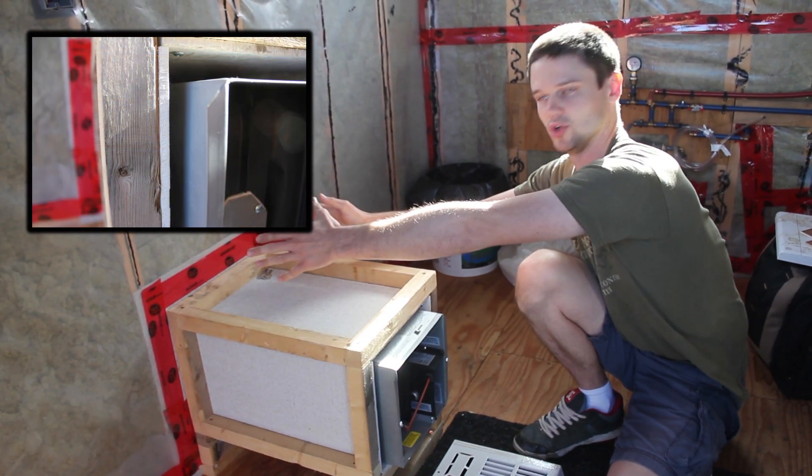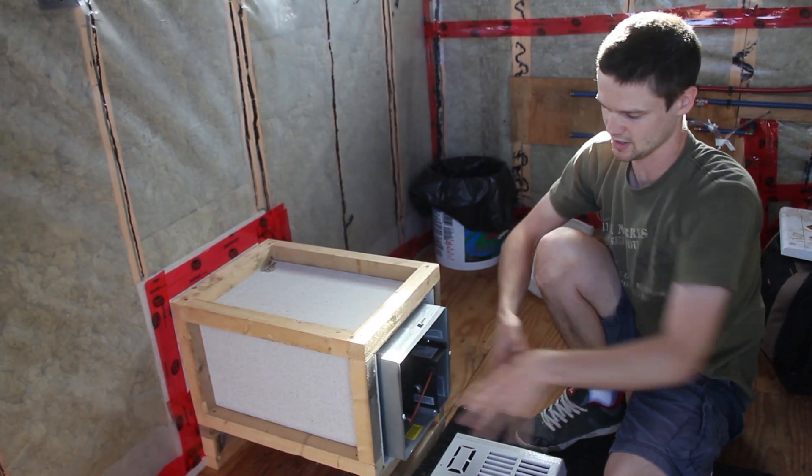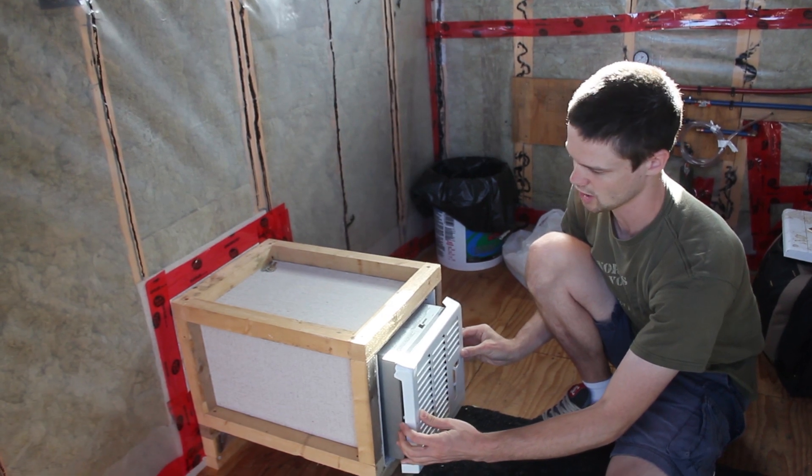It gets pulled into the back, enters the unit, heats up through the heating element, and then comes out the front. The grill is designed to accommodate that as well.